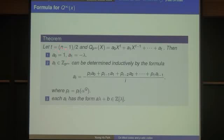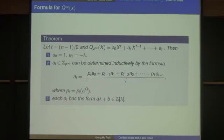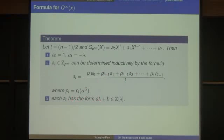So Q_infinity(x), which is the product of (x minus alpha^i), is given in terms of the symmetric polynomials S_i. We can use Newton's identity to solve the coefficients of Q(x). Let t equal (n minus 1)/2, and write Q_infinity(x) as A_0 x^t plus ... Then the leading term is 1, the second term is minus lambda, and the other A_i's can be determined recursively, where P_i is either lambda or mu, and mu is also lambda minus 1. Every A_i turns out to have the form A + B*lambda, where A, B are integers.